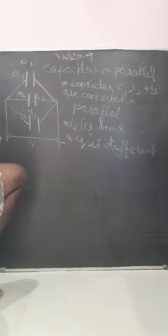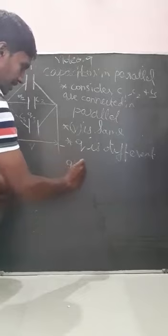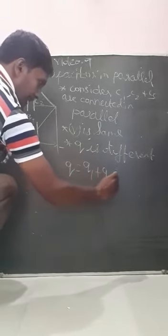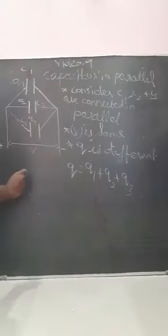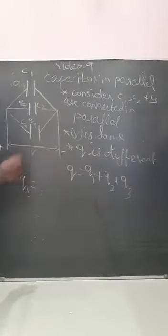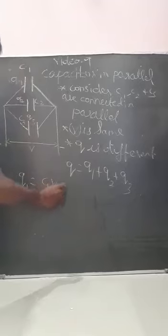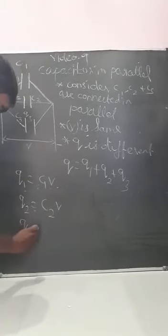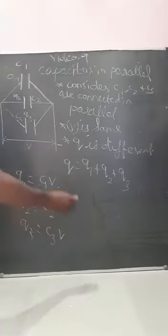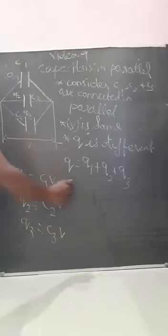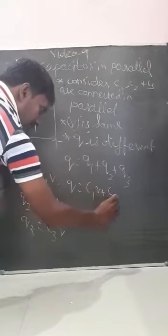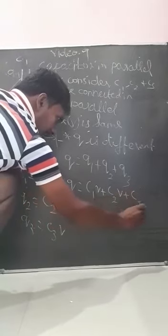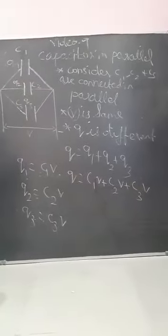So you have to find the total charge across each capacitor. That is Q equals Q1 plus Q2 plus Q3. Q1 is equal to C1 times V. Q2 is equal to C2 times V. Q3 is equal to C3 times V. Substituting, Q equals C1V plus C2V plus C3V. This is the total potential difference across the capacitors connected in parallel.